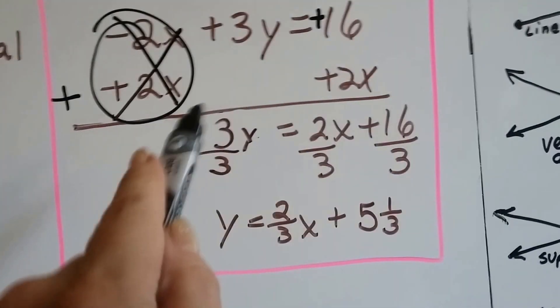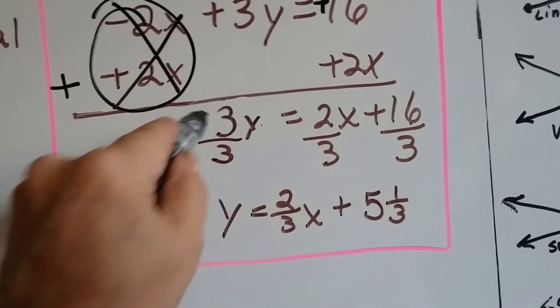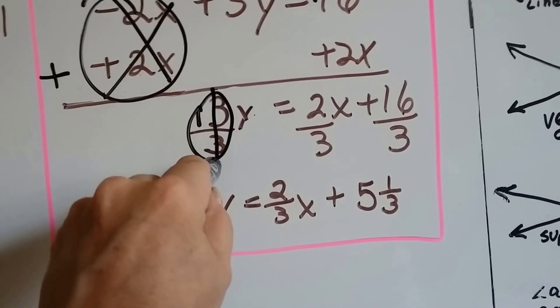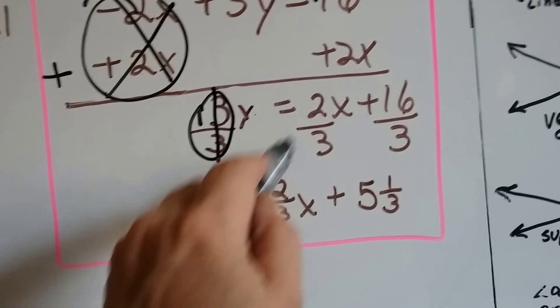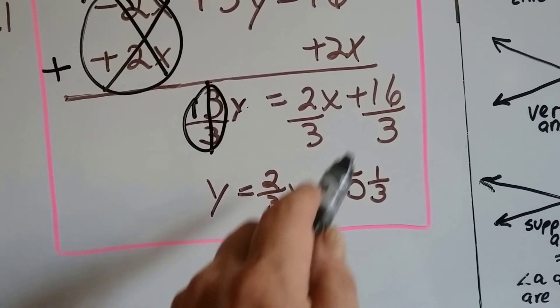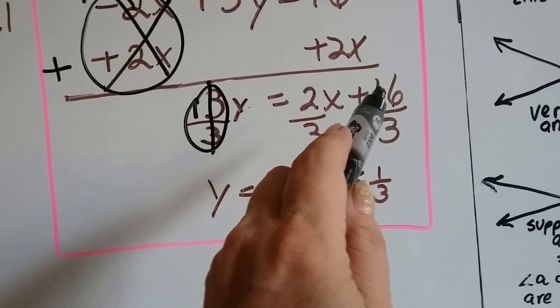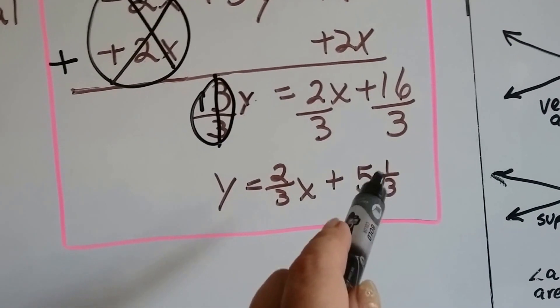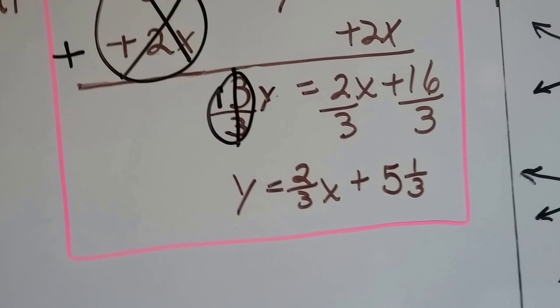So we need to divide each one of these terms by this 3. We get our buddy the invisible one again. So we've got y by itself. This 2 thirds is going to stay 2 thirds as our slope, x. And 3 goes into 16 five times with one left over. So that's 5 and 1 third for our y-intercept, b.